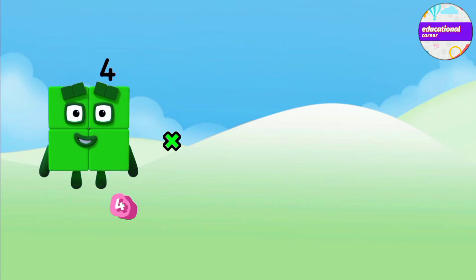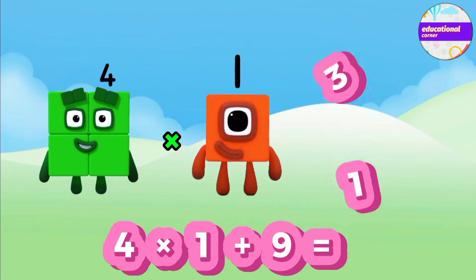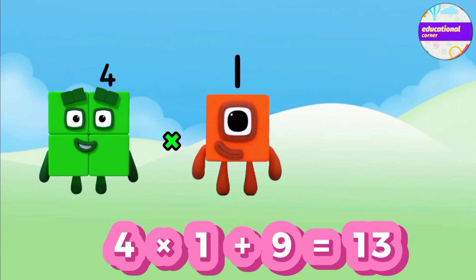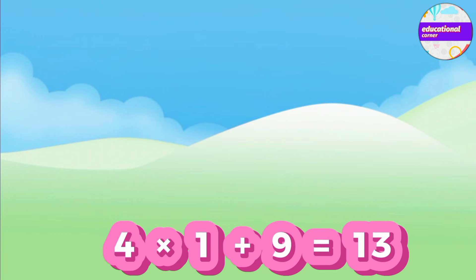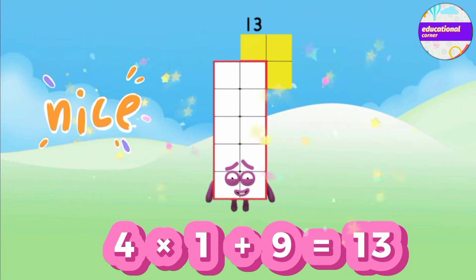First we do multiplication, then addition. 4 multiplied by 1 equals 4, and then plus 9 equals 13.